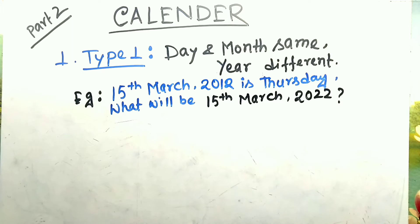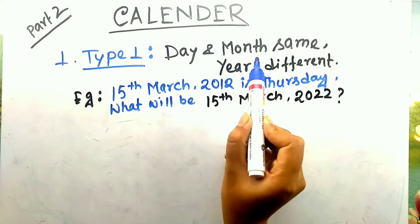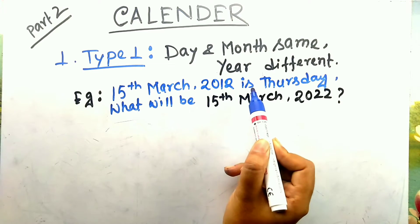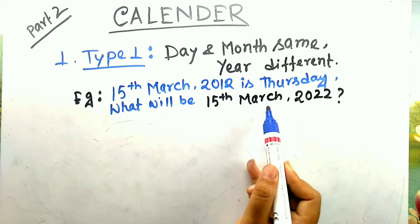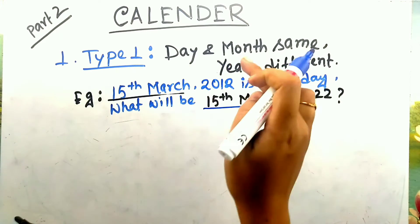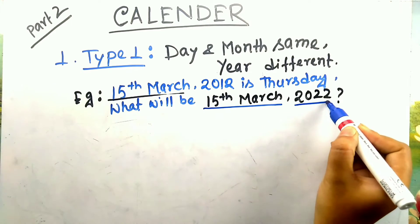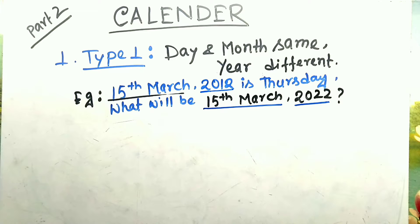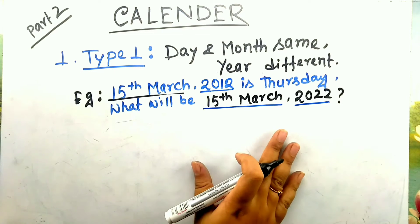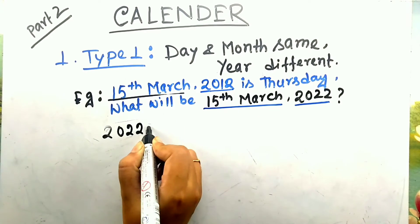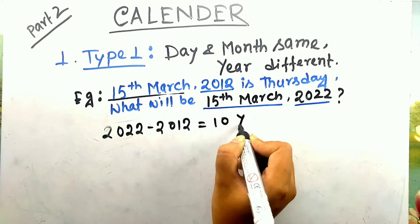Our first type is when your date and month are the same but the year is different. Look at the question: 15th March 2012 is Thursday. What will be the day on 15th March 2022? Here the date and month are both the same, but the difference is only in the year — 2022 versus 2012. To solve this, first calculate the difference between the two years: 2022 minus 2012 equals 10 years.